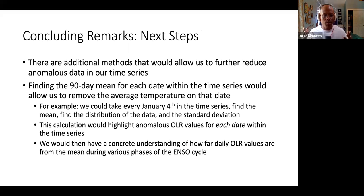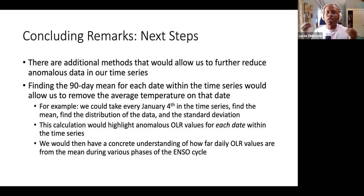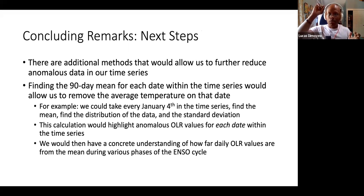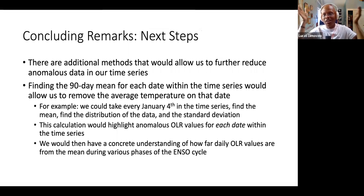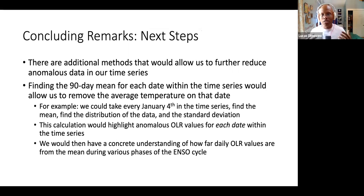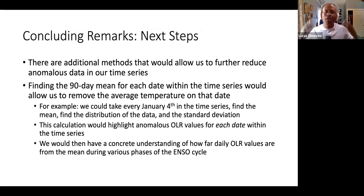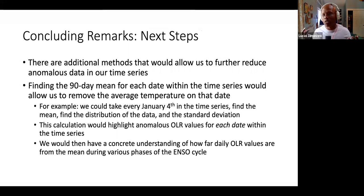The next step would have been to find the mean for every day within our time series. We have our arrays, and we'd pluck a date — say, November 15th — and create 42 values of November 15th, find the mean, and find its distribution. Then we could actually say, during some point in the ENSO cycle, this is how far our OLR value is away from the mean for that day. That would have been the answer, but we didn't quite get there. Working with datetime multidimensional arrays turns out to be quite rough, but it's the core of a lot of these computational techniques.